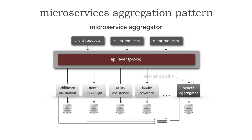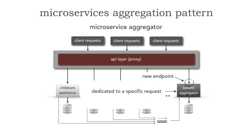With this in mind, here's the new endpoint from the API layer that says get all — or, what benefits does Mark have? And I'm able to now, per request — and these are also dedicated to specific requests — spend 17 milliseconds to go out to my data, do a query, and return that information.